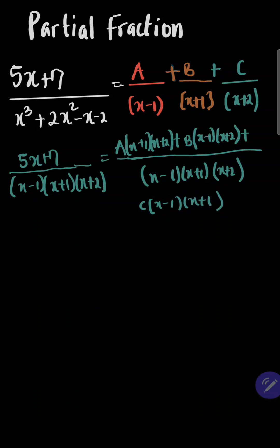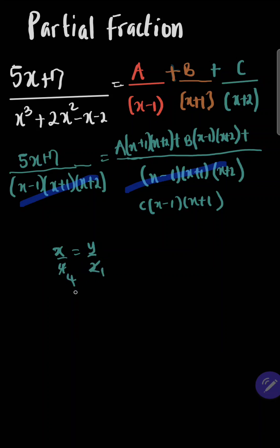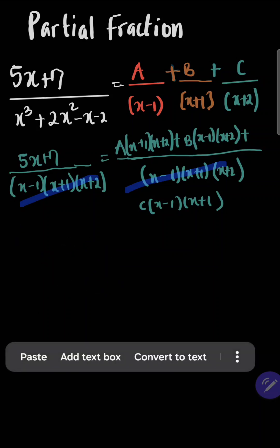Looking at this, you can see that the denominator can easily cancel out the other denominator. Looking at this little rule of fractions — when you have x over 4 equals y over 2, the 2 can cancel into the 4. So this is just a little arithmetic, meaning the denominators cancel out. Now, equating the numerators: